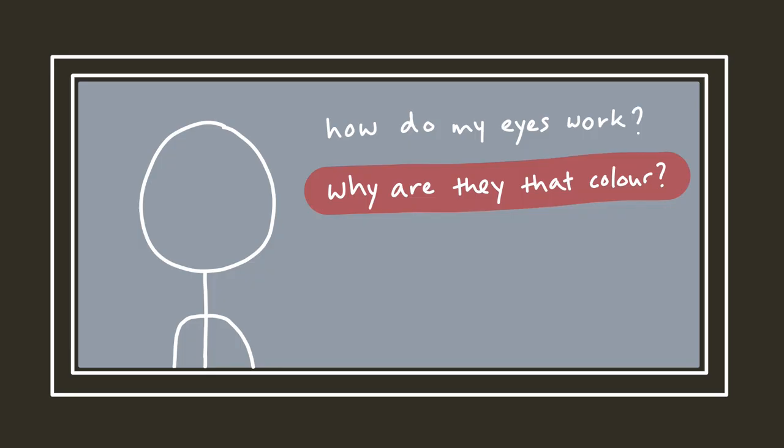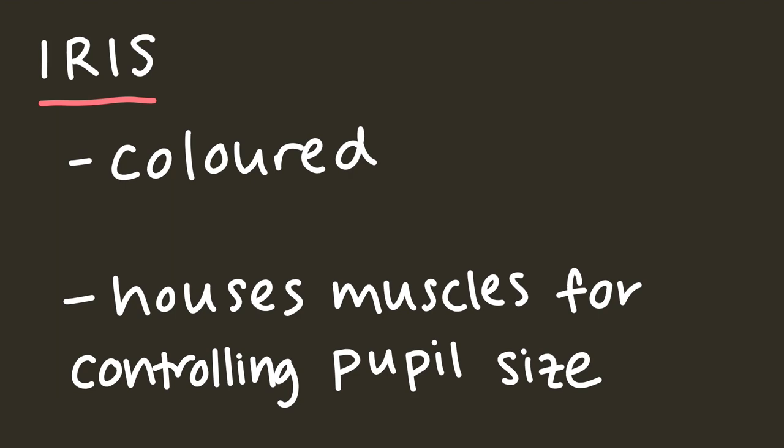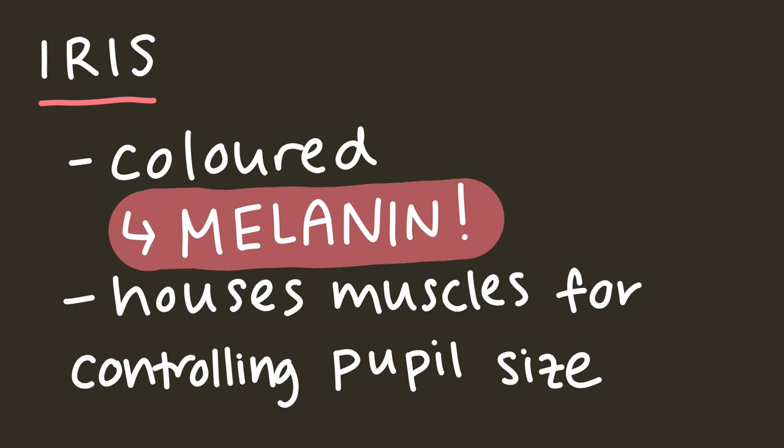Okay, now that we understand how the eye works, let's revisit the second question from the beginning of the video. Why are they that color? Like mentioned before, the iris is the colored portion of the eye, and the pigment that gives the iris its color is, drum roll please, melanin.